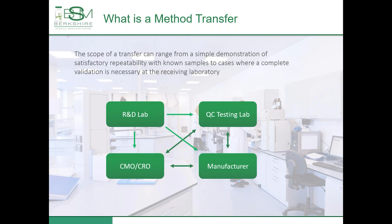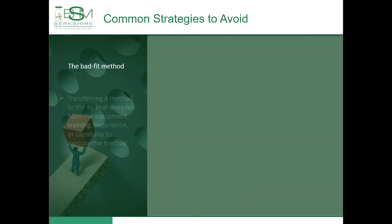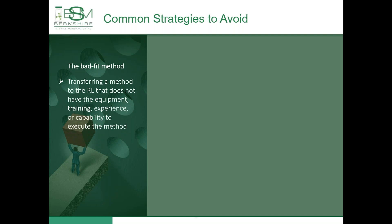Let's start off with some common strategies to avoid. The bad fit method: transferring a method to a receiving laboratory that does not have the equipment, training, experience, or capability to execute the method. If the receiving laboratory needs to purchase an instrument to qualify and transfer a method, time needs to be built into the schedule to purchase, qualify, and train on the use of the new instrumentation. Bad fit methods can also include limited access to critical reagents, such as standard materials, as well as reagents used to execute the method and prepare solutions. When reagents are in critical supply, that leaves a lot of pressure on the receiving laboratory to execute right first time, without allowing opportunity to train individuals on the method or instrumentation.